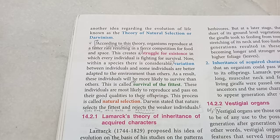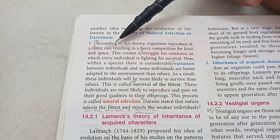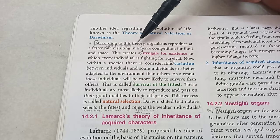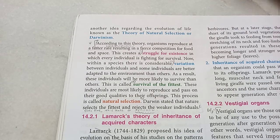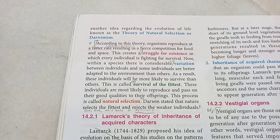His theory has five major points. Number one, organisms reproduce at a faster rate — that is, there is overproduction — resulting in a fierce competition for food and space, similar to what is happening with human beings with the population explosion. Because of this competition, there is a struggle for existence because the resources are very limited, so species and individuals fight for survival.